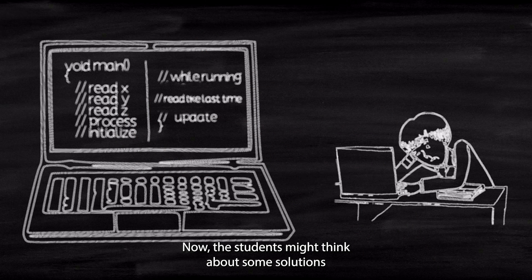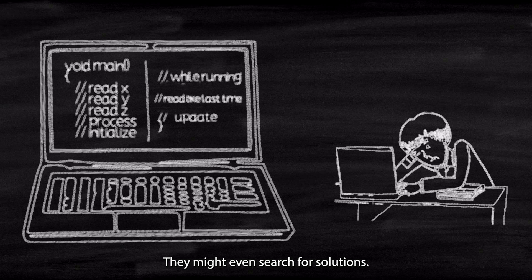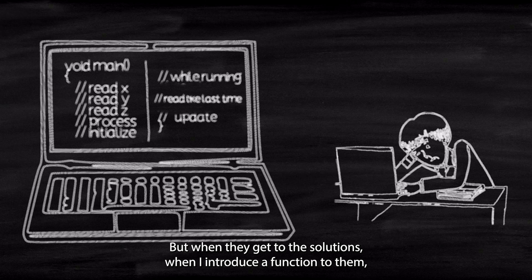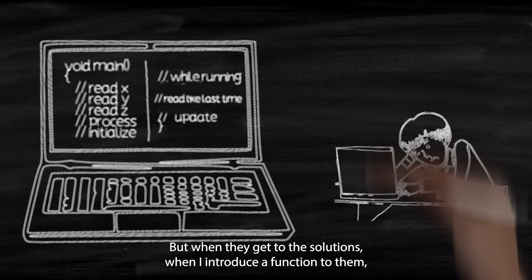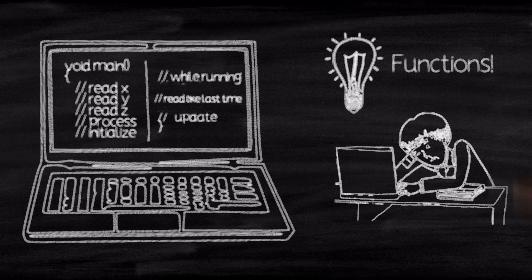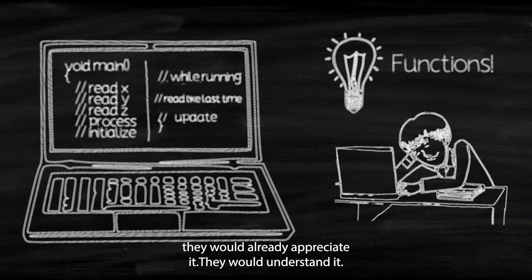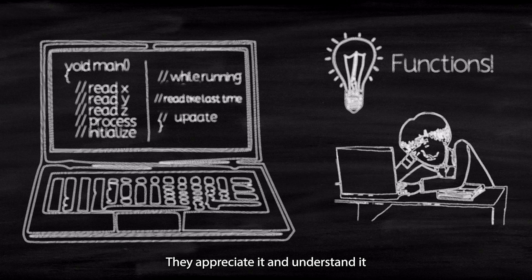I'm always repeating every time I need to improve the logic of something. I have to improve it everywhere in my code. I just wish there was a way to avoid such repetition. I wish there was a way to write something once and use it everywhere. Now the students might think about some solutions. They might even search for solutions. But when they get to the solutions, when I introduce a function to them, they would already appreciate it. They would understand it, they would know when to use it. It's not like something ambiguous and a boring assignment that they got from the professor. Now it's something that solves a problem for them and a problem that they have suffered from.